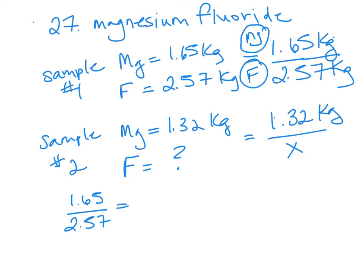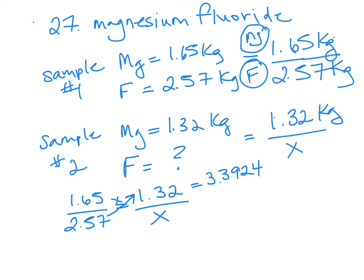To solve for X, we're going to set this up as an equivalent fraction problem. So I'm going to take that first fraction, 1.65 over 2.57, and make it equivalent to my sample two ratio, which is 1.32 over X. To solve for X we're going to cross multiply, which means we're going to take 2.57 and multiply it by 1.32. That gives us 3.3924.